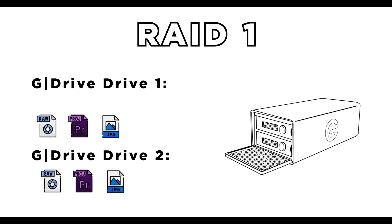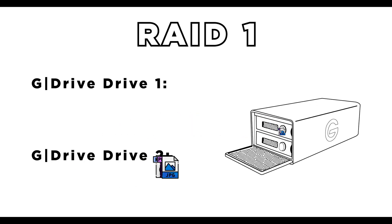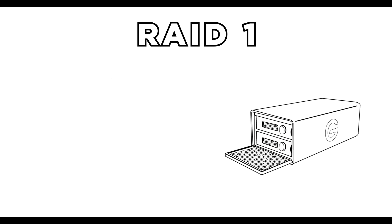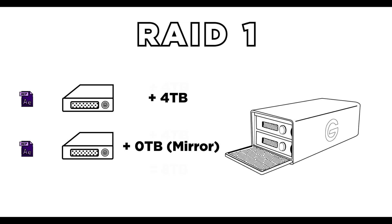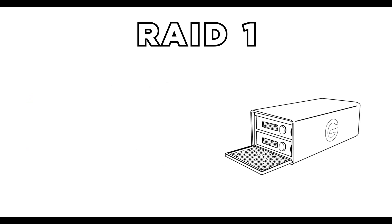RAID 1, or Mirrored, gives us the maximum protection. All of the data in the drive is distributed and copied twice. So if you have a drive just like this G-Technology 8TB, you will really only have four terabytes of storage capacity because all of your data is being mirrored. If one hard drive fails, you still have a backup copy on the other hard drive.